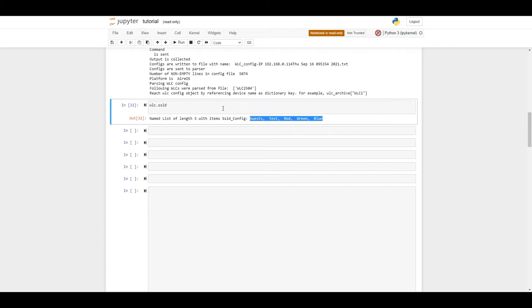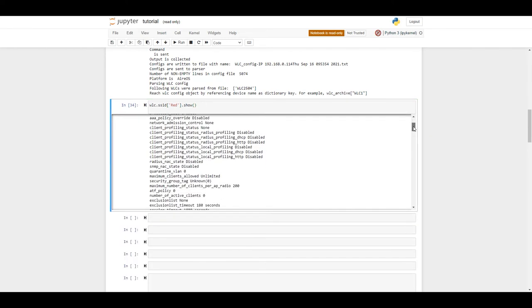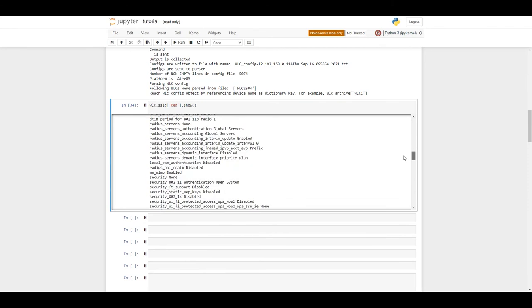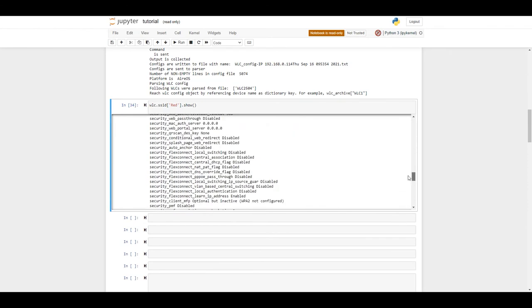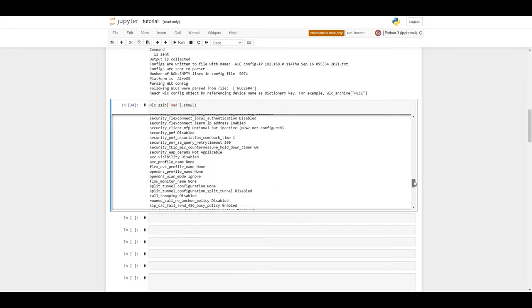What if we would like to see the configuration of some special SSID? We just need to add its name in square brackets. Let's name it red. Press Enter. And it shows that it is a config object of SSID config red. But how to see the full config? We just need to use the show command. Let's try to add show and then press Enter. Now, we can see the full configuration of this SSID.